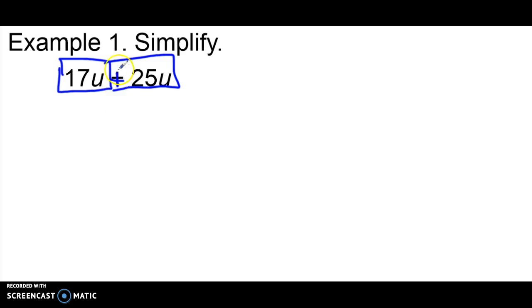So when we see that we have two like terms and they're being added together, what we're going to do is our final answer will keep that variable. So our final answer will have the U. And then I'm going to take the coefficients, the numbers being multiplied by the variable, and I'm going to add them together. 17 plus 25 gives me 42.